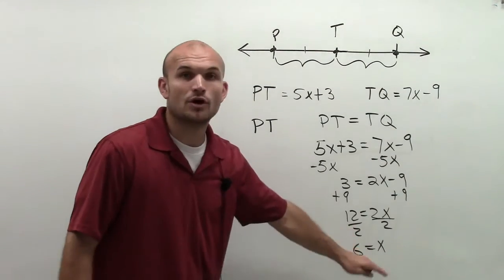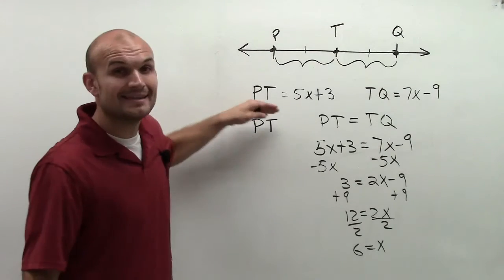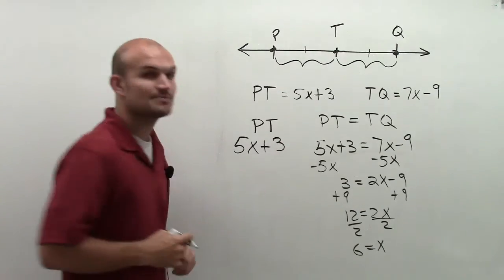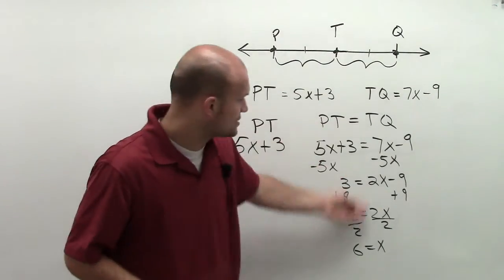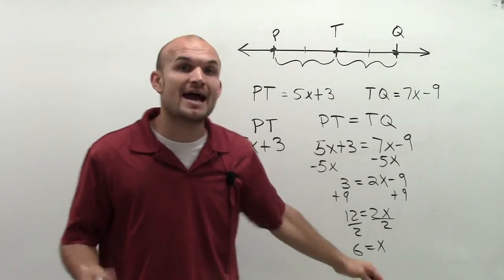So therefore, now I know that the value of my variable x is equal to 6. So to find the value of PT, remember PT up to this point is 5x plus 3. But now by solving it, by using the congruent segments, I now know the value of x, which is 6.